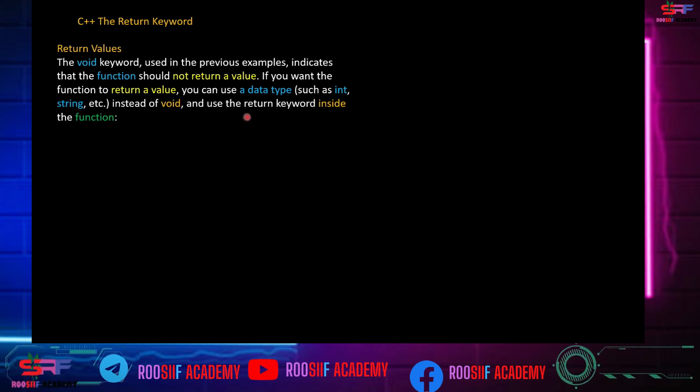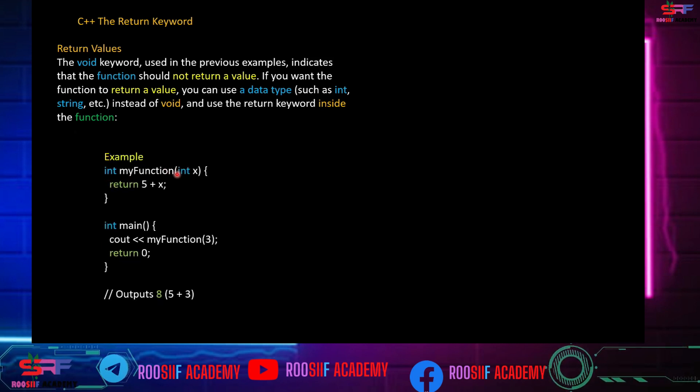Instead of void, we use the return keyword inside the function. In this example, the integer myFunction has a parameter. The integer data type becomes the return type. You use the return keyword inside the function to return a value.